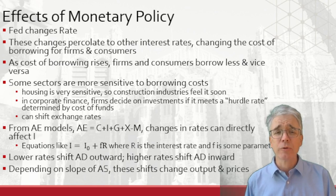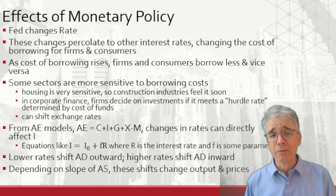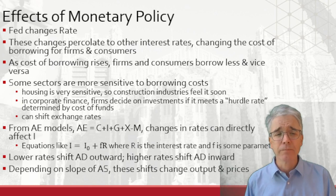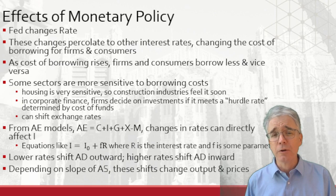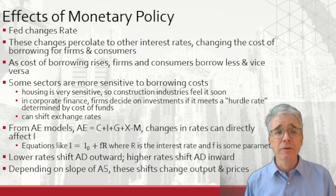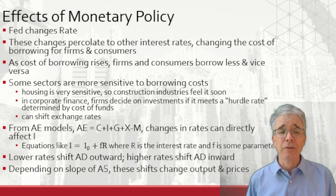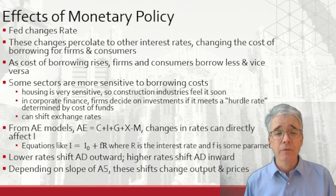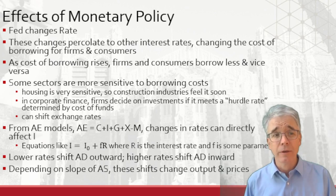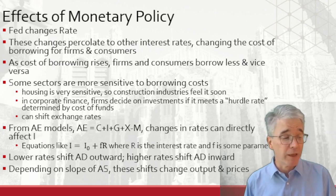Later on, especially in subsequent classes, you might complicate the equations. Maybe I equals I-naught plus F times R, where R is the interest rate and F is some parameter. But for now, we just want to understand that lower interest rates are going to shift the AD — aggregate demand curve — outwards. Those changes will shift both the level of output and the level of prices in ratio, depending on the slope of the aggregate supply.